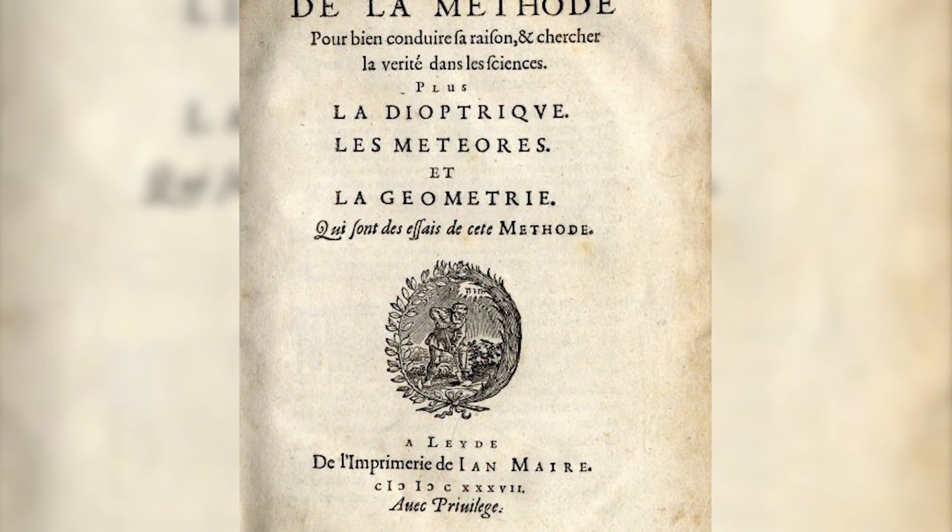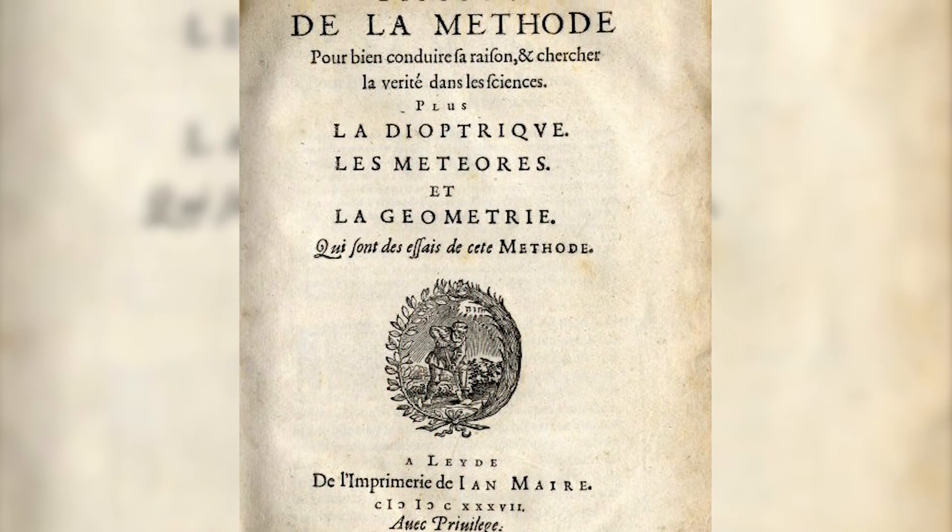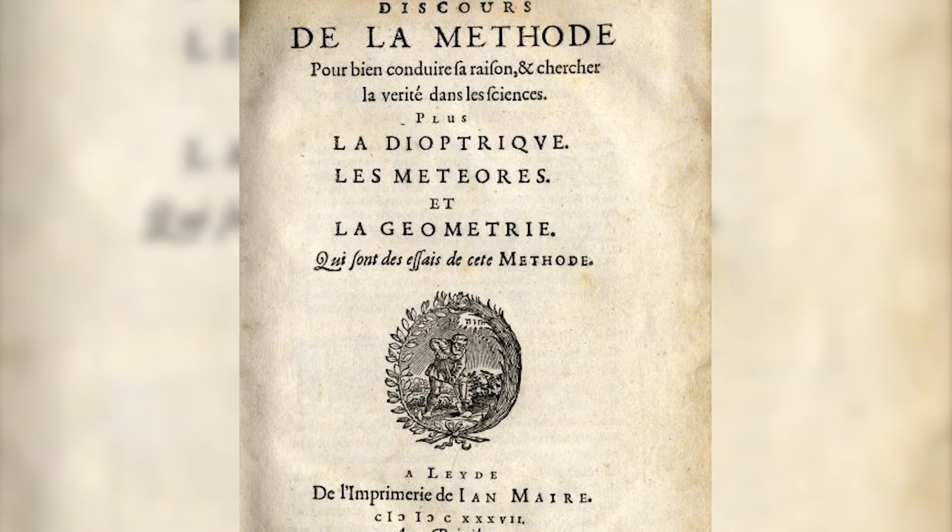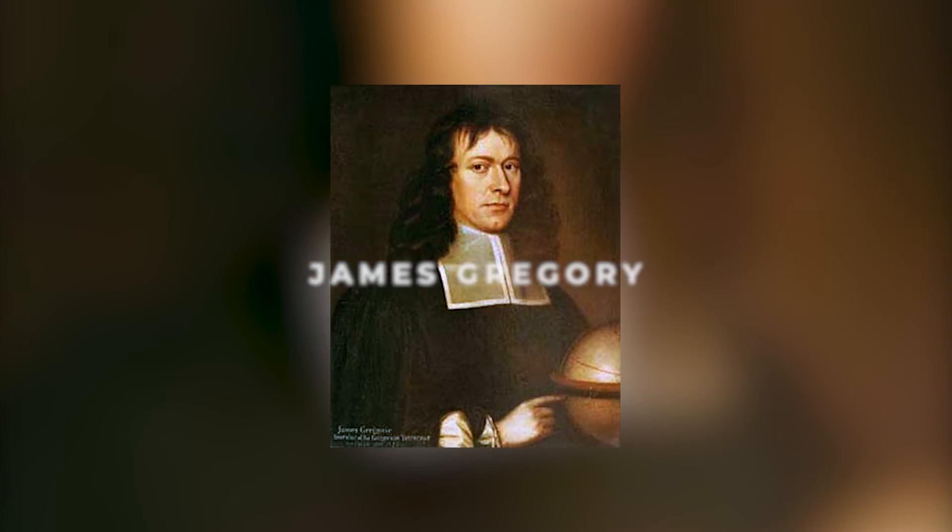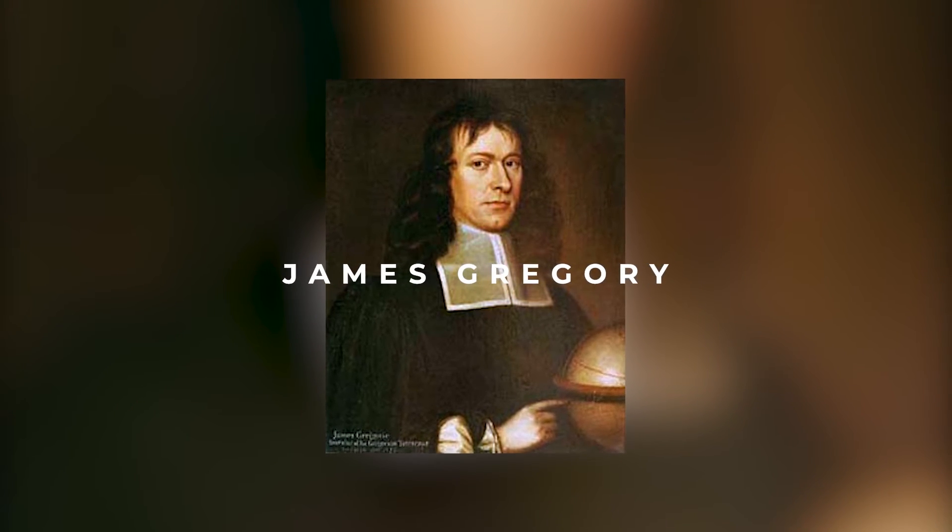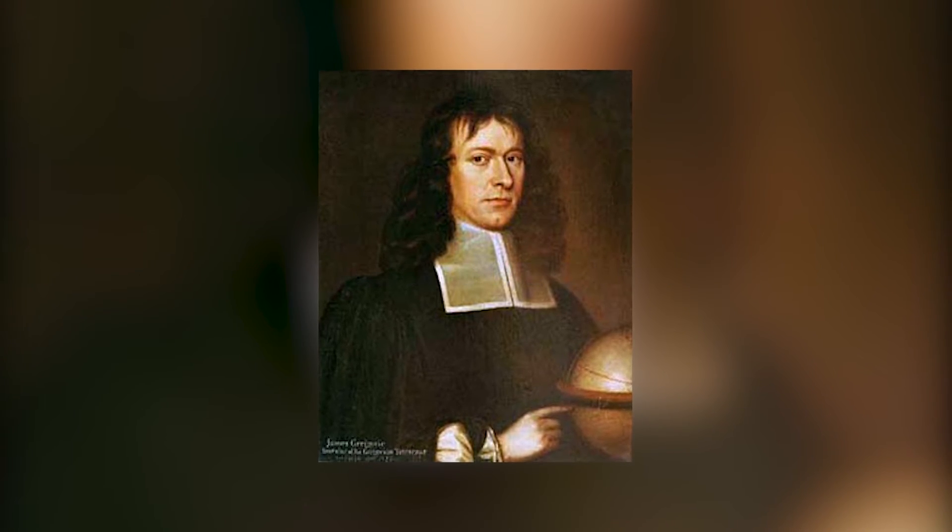His Discourse on Method of 1637 was the turning point in the development of the telescope. James Gregory proposed a design for the reflecting telescope in his 1663 book, Optica Promota, which was eventually adopted as the standard design.